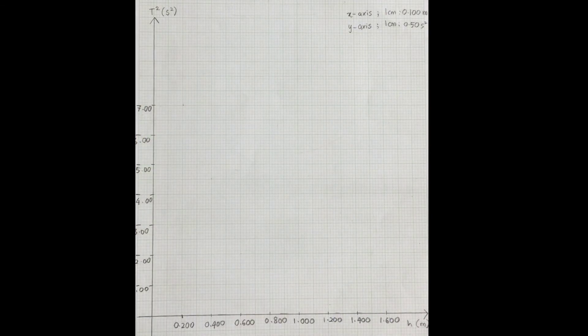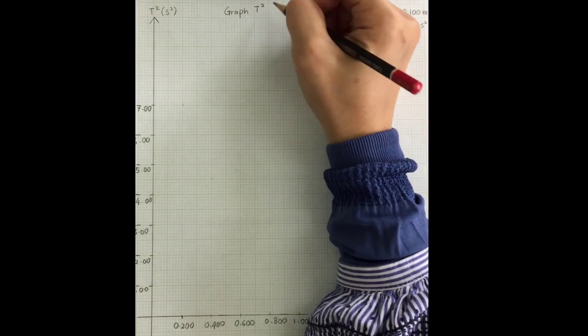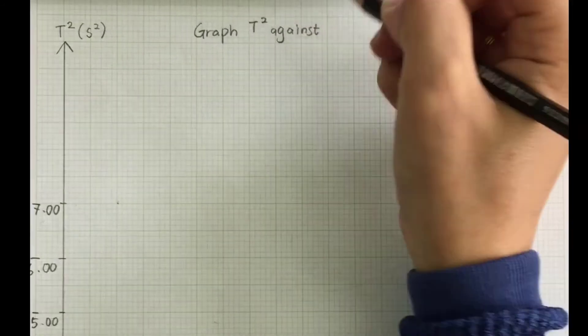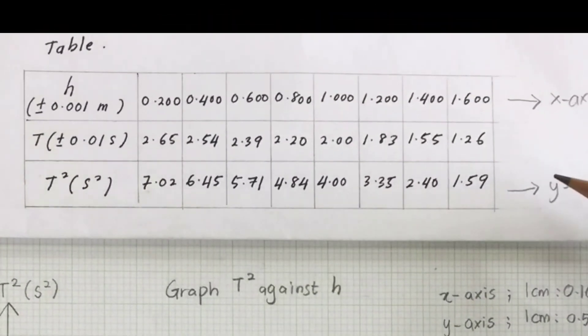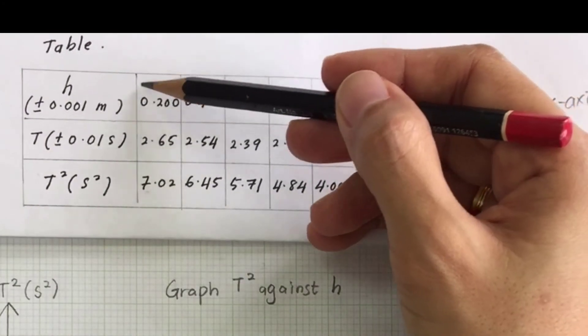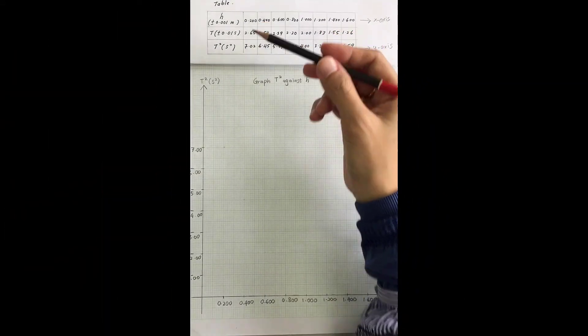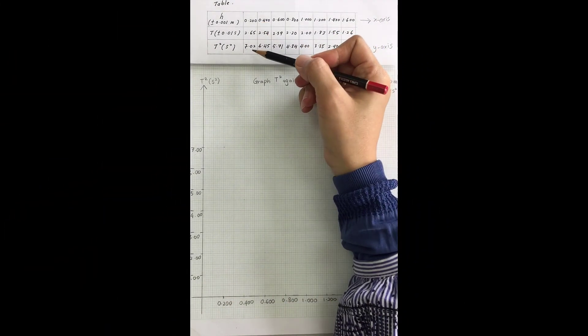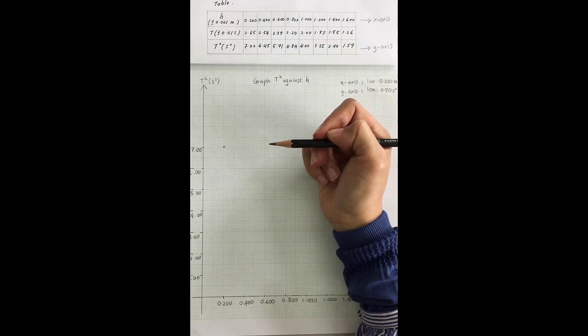After that, don't forget your title of the graph. Your title of the graph is graph T squared against H. By referring your data up here, we are going to plot the first data. This is the x-axis, this is your y-axis. Choose 0.2 up here, and then T squared is 7.02, it should be right here.